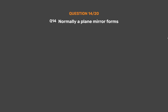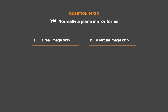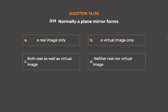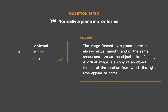Question number 14. Normally a plain mirror forms: option A, a real image only; option B, a virtual image only; option C, both real as well as virtual image; option D, neither real nor virtual image. The correct answer is option B, a virtual image only. The image formed by a plain mirror is always virtual, upright, and of the same shape and size as the object it is reflecting. A virtual image is a copy of an object formed at the location from which the light rays appear to come.